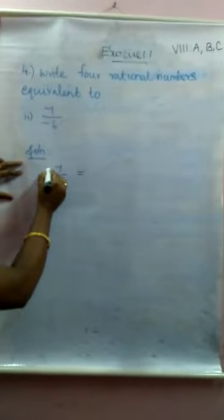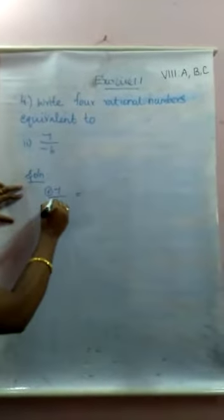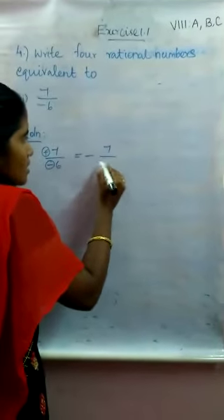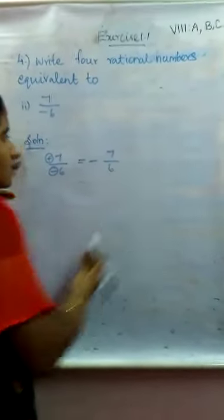In the division rule, positive and negative gives negative. So we can write now minus 7 by 6. Now you can find the rational numbers. How will we find the equivalent rational numbers?